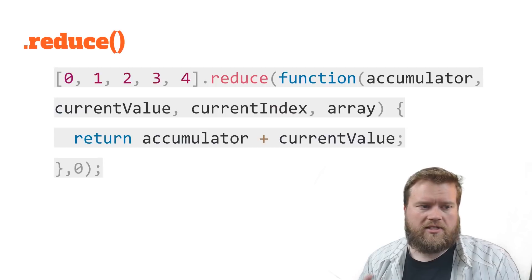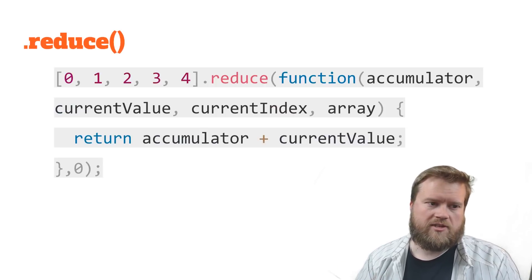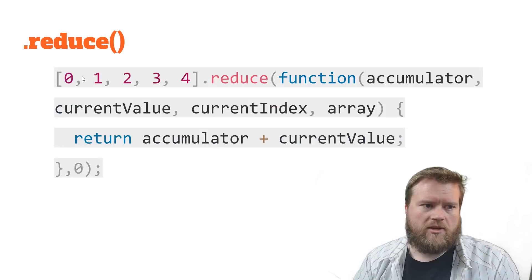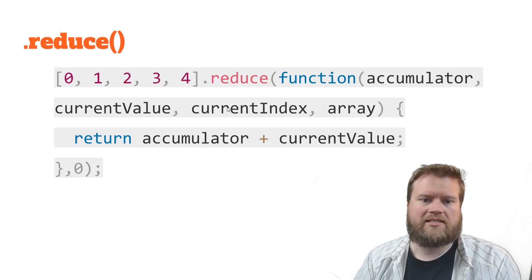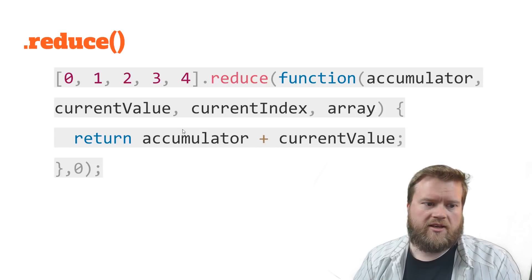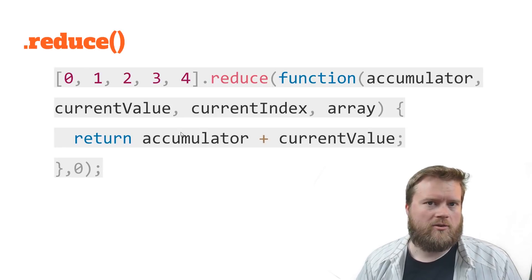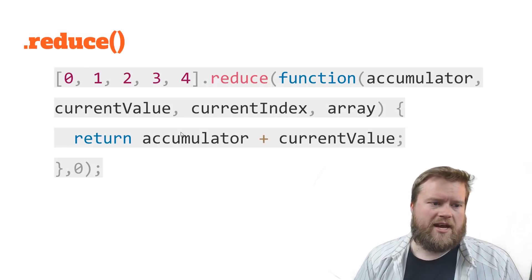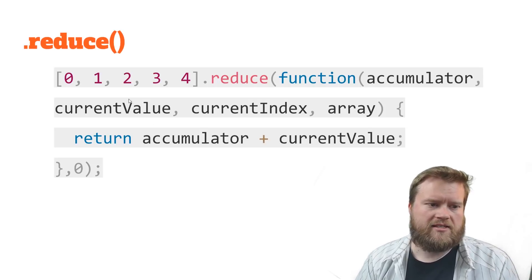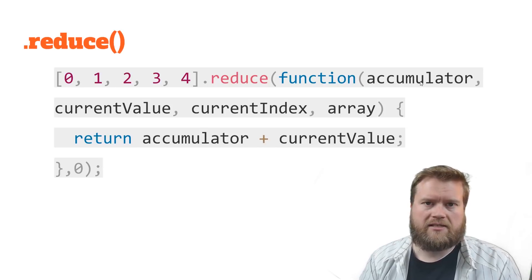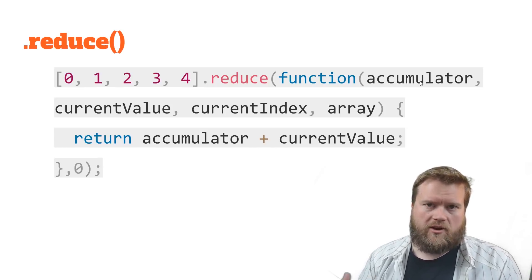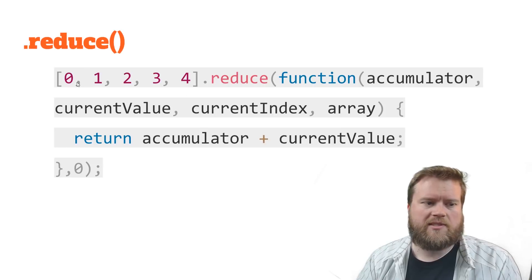The last one I want to talk to of these three major ones is reduce. And reduce can do a lot of cool stuff. So here's an array: 0, 1, 2, 3. Reduce, we have a function. And then we have an accumulator, a current value, a current index, and an array. And so what we can do with it is we're basically building like a brand new object or array or something. So reduce can take like this whole array. And in this case, we're taking an accumulator, and we're adding it to current value. So what this would do is add each one of these together, and we return one number.